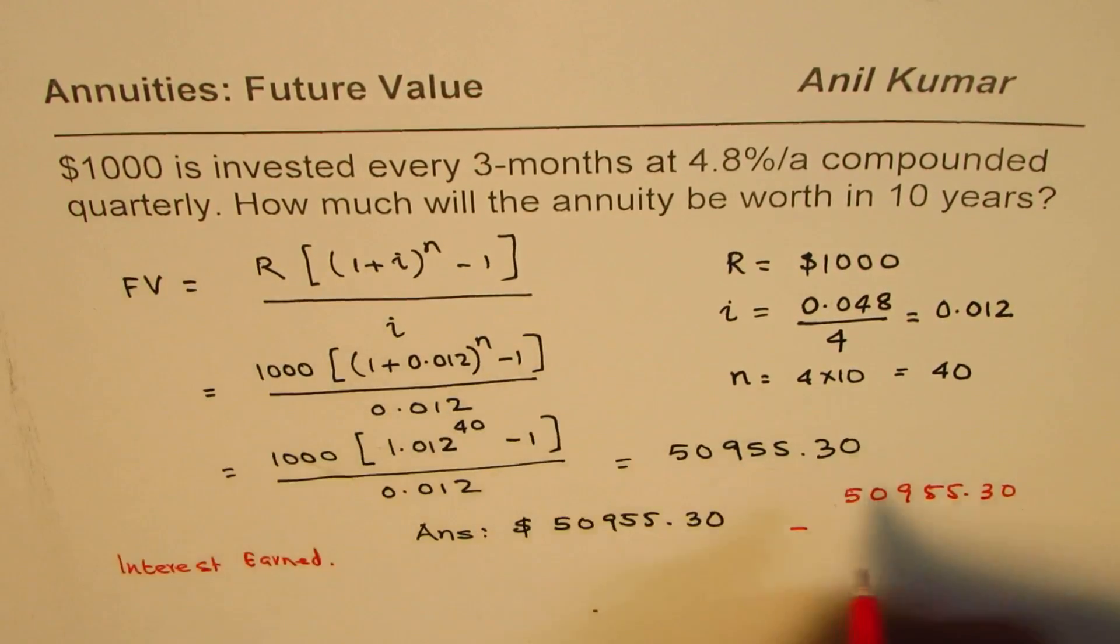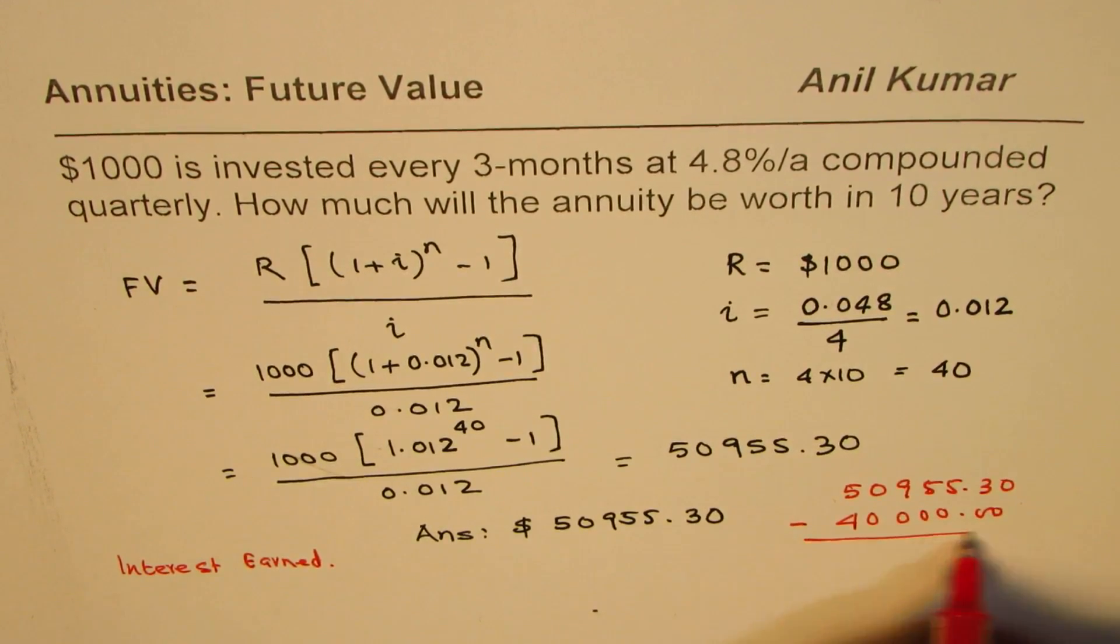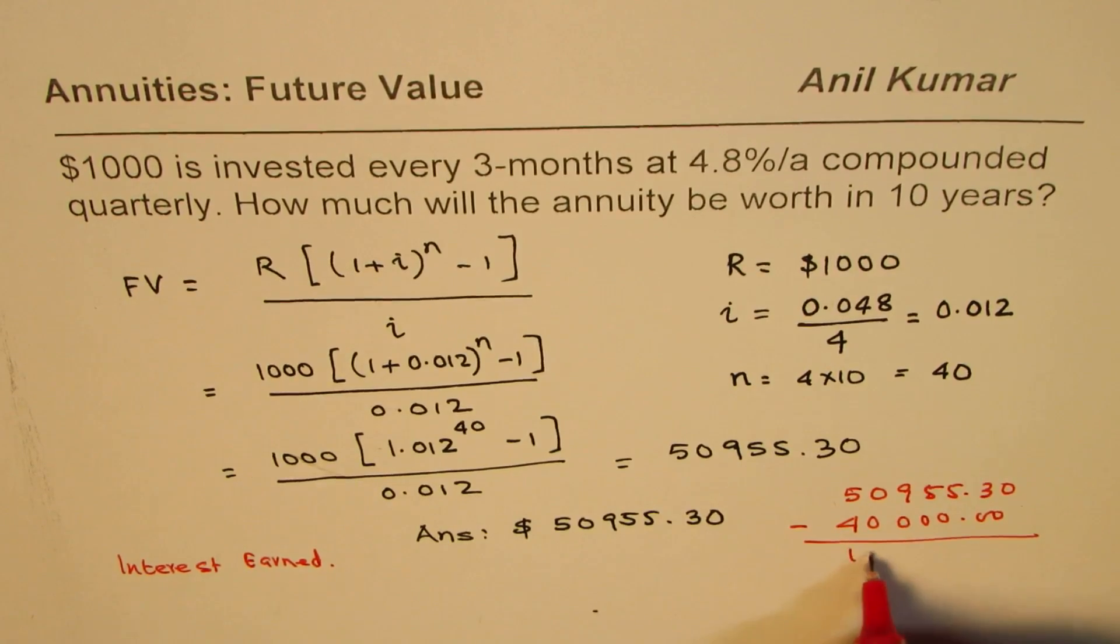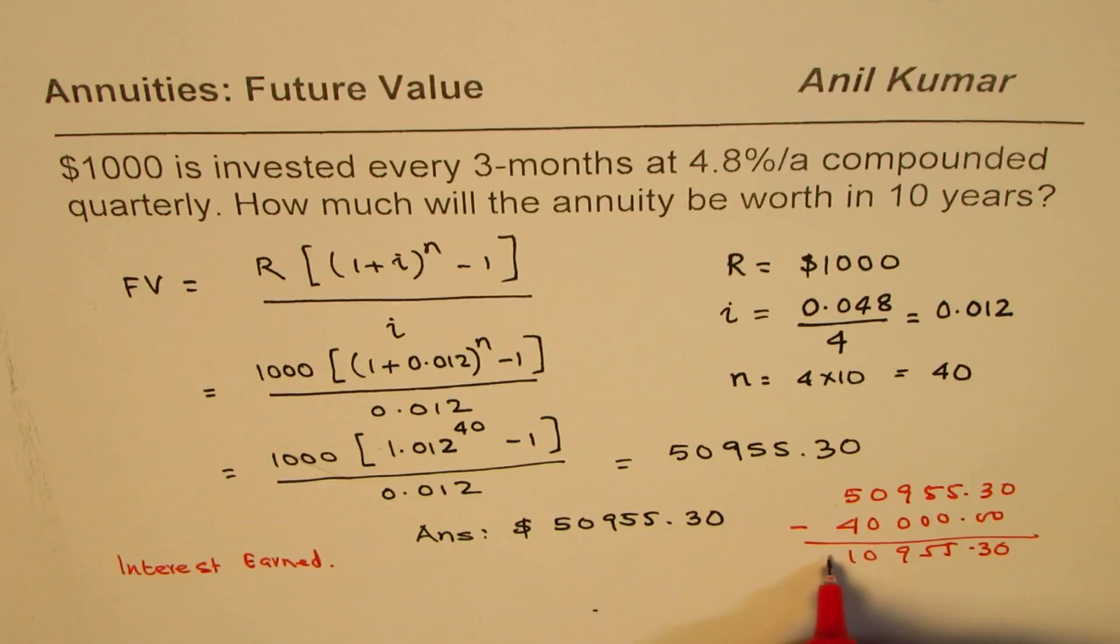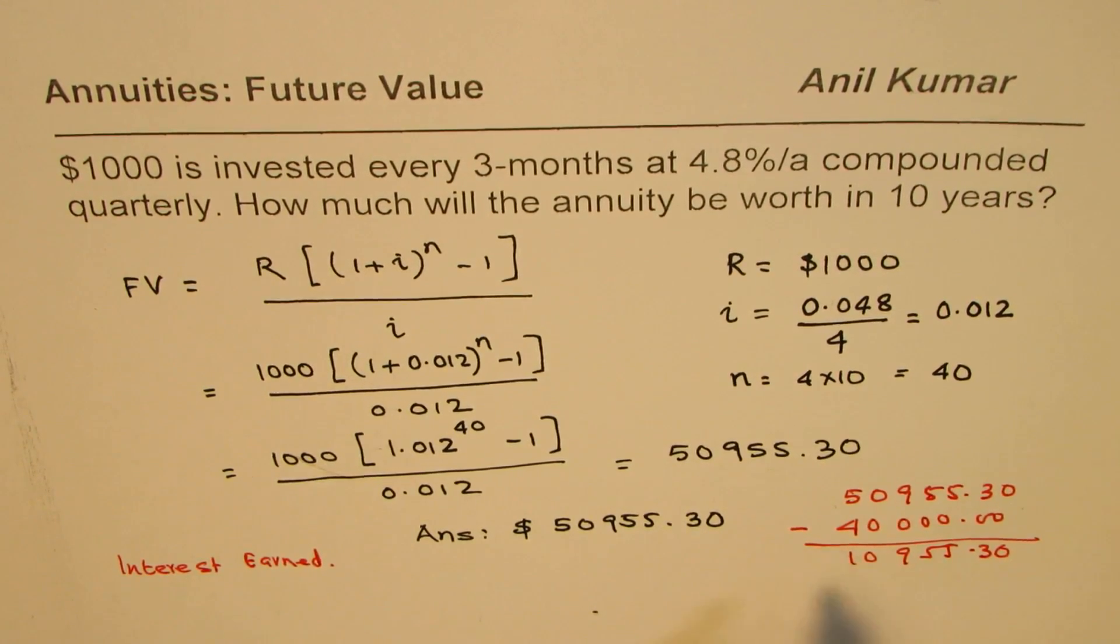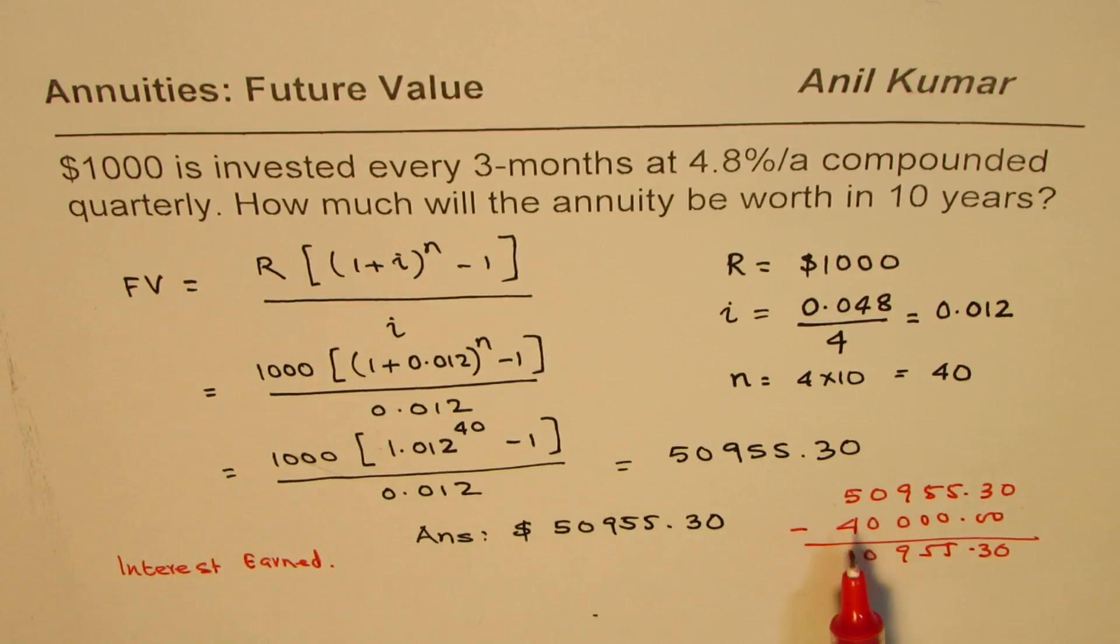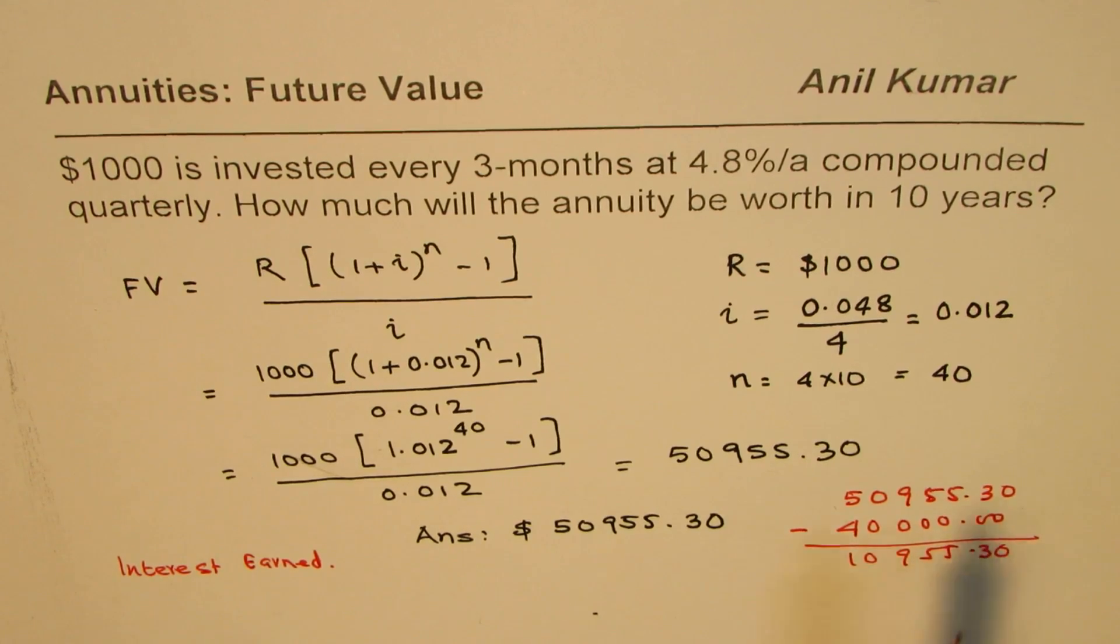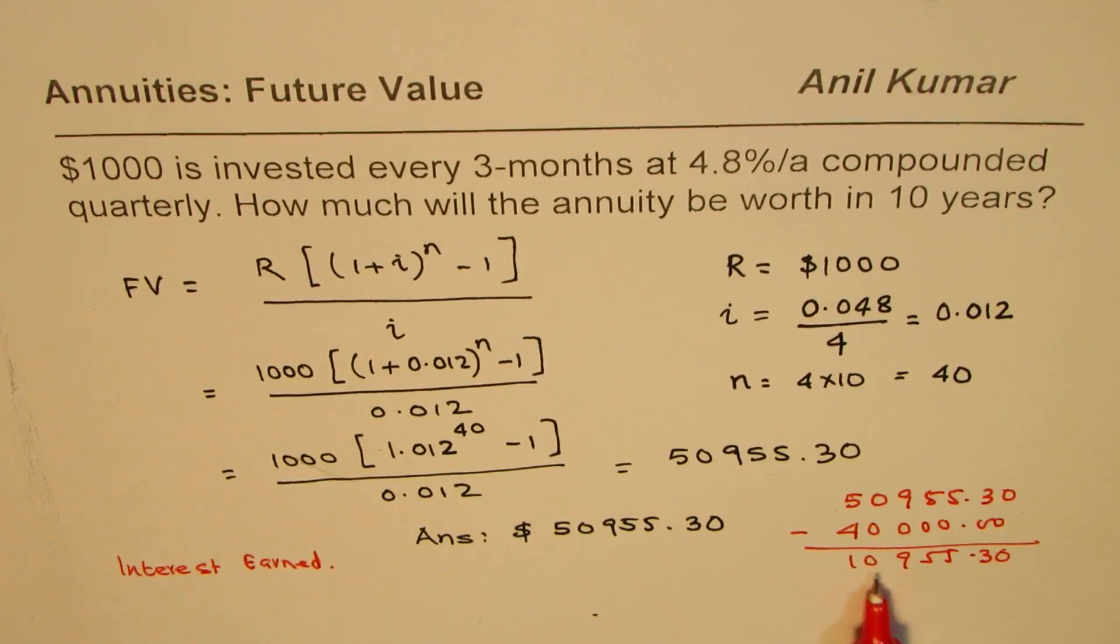You could calculate this as $50,955.30 take away 40 times $1000, which is $40,000. So the interest earned will be $10,955.30. That will be the interest earned on your investment.